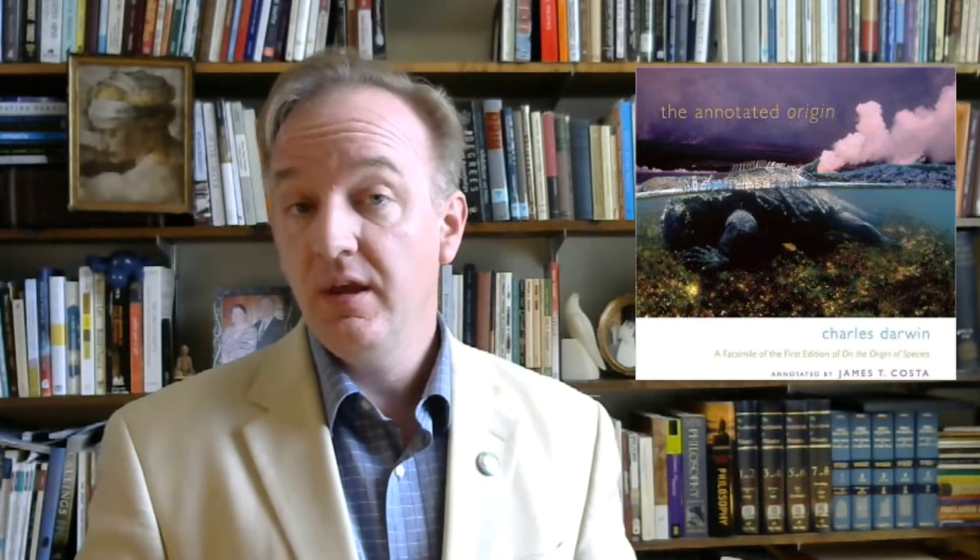Darwin begins Chapter 2 of The Origin of Species by noting that naturalists have only a vague sense of what a species really is, and the term variety is also difficult to pin down with a definition. This vagueness is important, since one of Darwin's goals in this chapter is to call into question the precise delineation of species. He next considers individual variations we observe within species in nature.